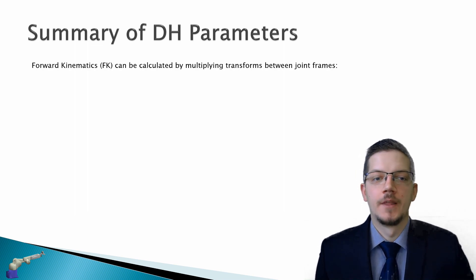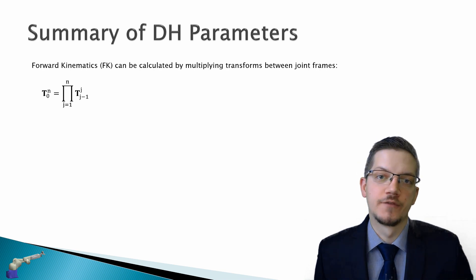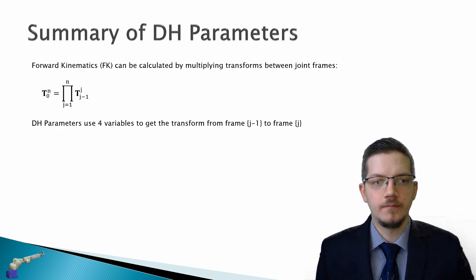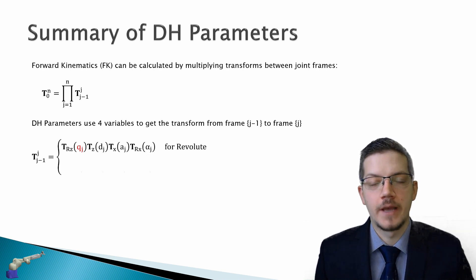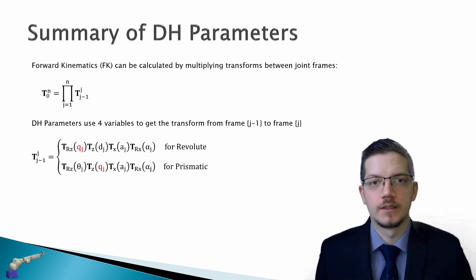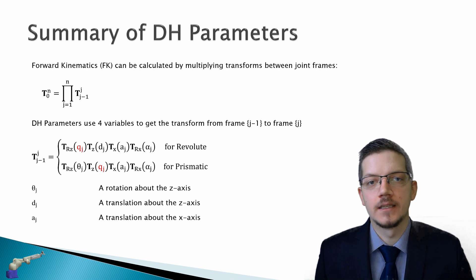To summarize: forward kinematics can be calculated by multiplying transforms between joint frames — from frame 0 (the base) to frame N (the end effector). The DH parameters give a minimum of four parameters applied in the same sequence to get the transform from frame j-1 to j. For a revolute joint replace rotation about z with joint variable q; for a prismatic joint replace translation about z with q. The sequence is: rotate about z by theta, translate about z by d, translate about x by a, and rotate about x by alpha.